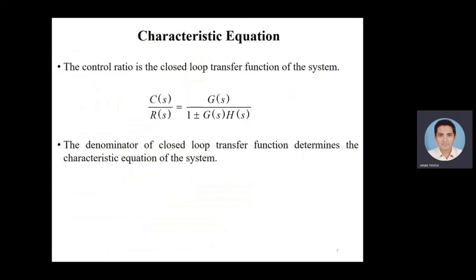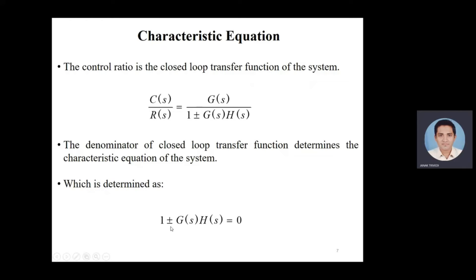The characteristic equation: the control ratio is the closed loop transfer function of the system, c(s)/r(s) = G(s) / [1 ± G(s)*H(s)]. The denominator of the closed loop transfer function determines the characteristic equation of the system, which is defined as 1 ± G(s)*H(s) = 0.